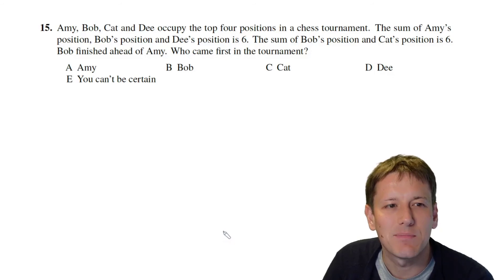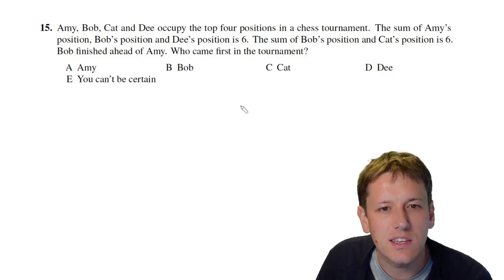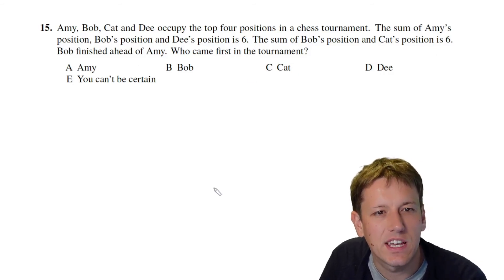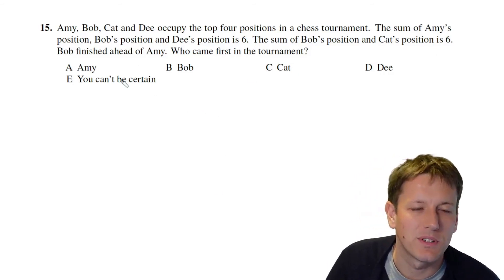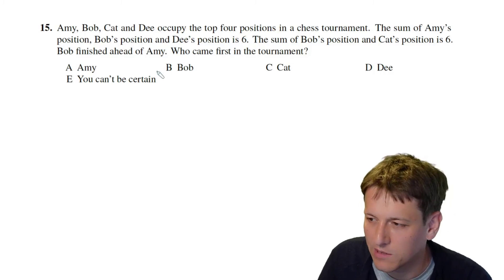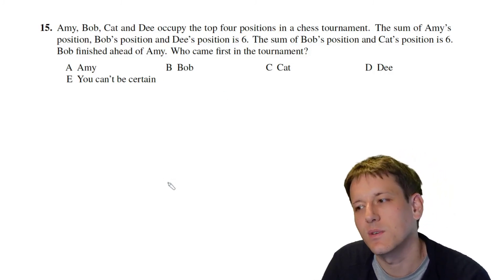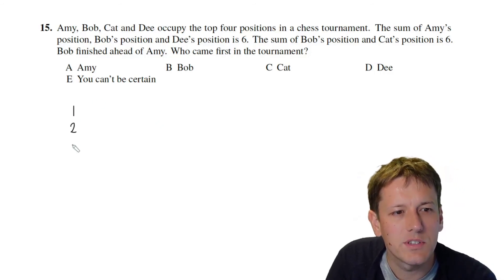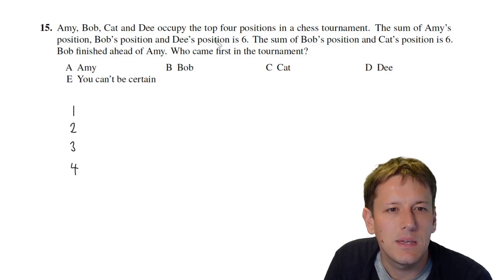Question 15. Amy, Bob, Cat and Dee occupy the top four positions in a chess tournament. The sum of Amy's position, Bob's position and Dee's position is six. The sum of Bob's position and Cat's position is six and Bob finished ahead of Amy. Who came first in the tournament? One of the four people or you can't be certain. Can't be certain is very rarely the right answer in these questions but very occasionally it has been.